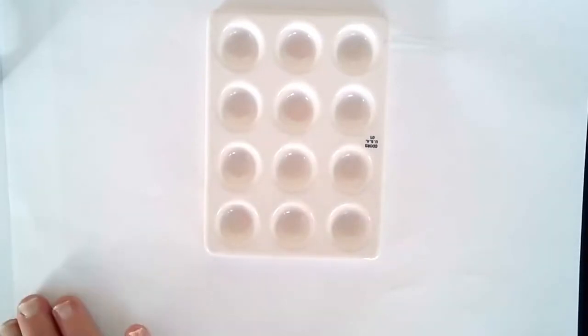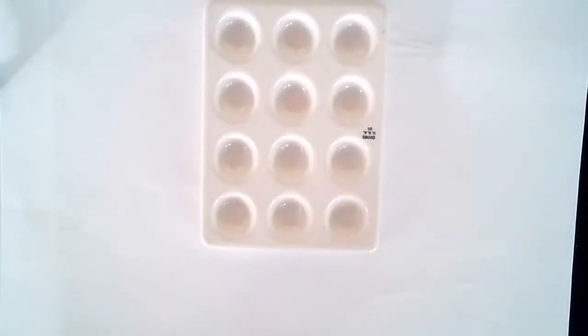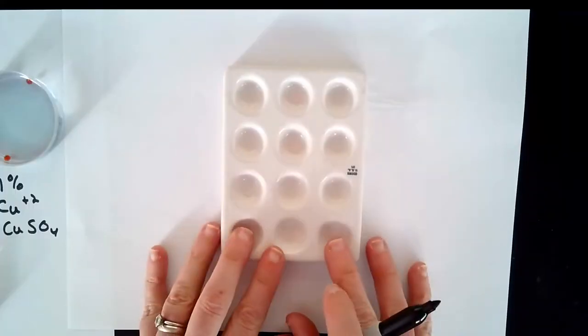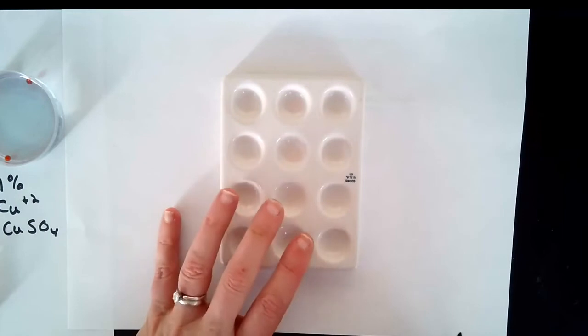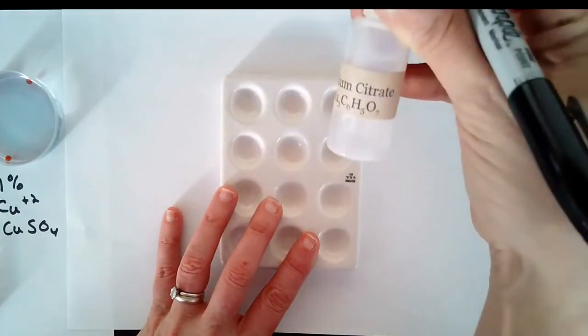So to label the spot plate, you need to indicate where you are putting the beads, what they were made from, and then how you are going to treat them, either with the sodium citrate or with a control solution.